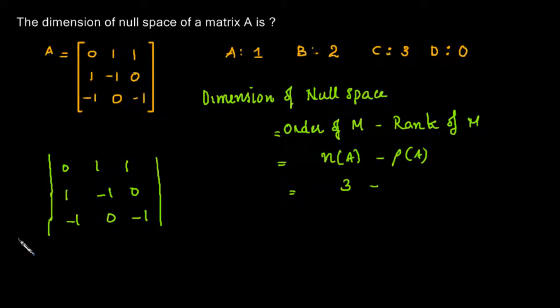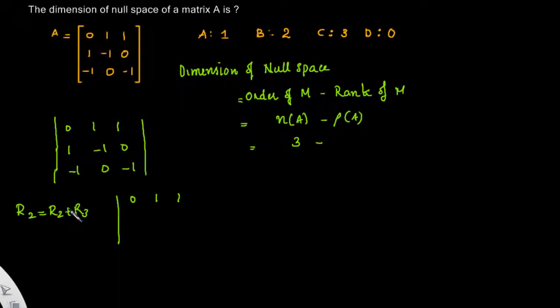We will do some elementary transformation to solve this quickly. R2 equal to R2 plus R3. From that we have [0 1 1]. By doing this transformation the determinant does not change. R2 is R2 plus R3, so here we have 0, minus 1, and minus 1. We have minus 1 here, 0, minus 1.